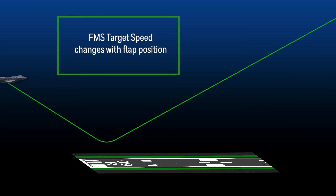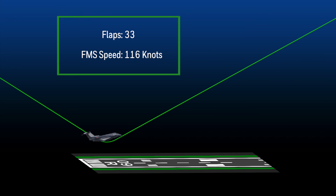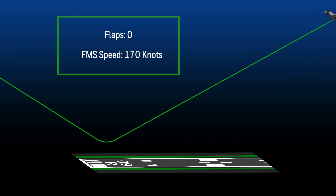In the event of a go-around, the FMS target speed also changes with flap position. During the initial go-around with the flaps at 33, the FMS target speed is 116 knots. As the flaps are retracted, the target speeds increase up to 170 knots with flap 0. As always, the pilot can select a manual speed at any time.